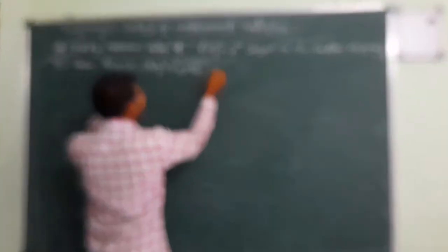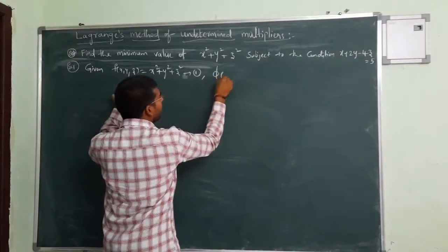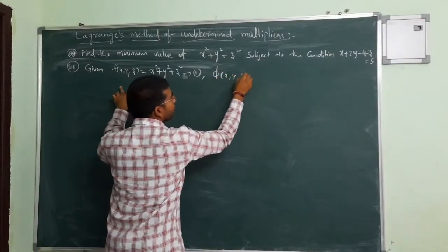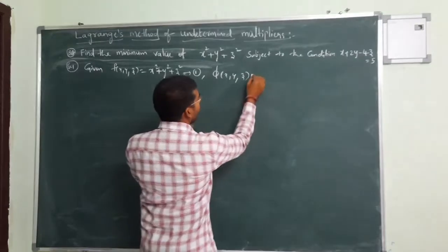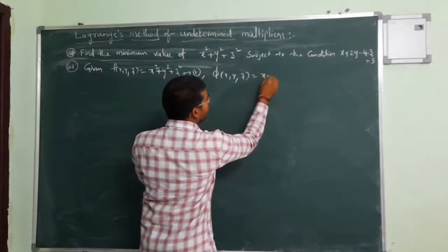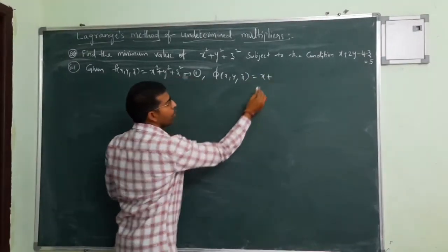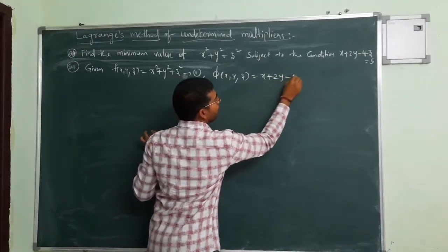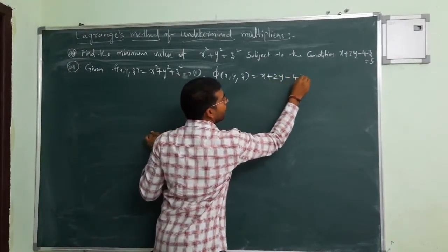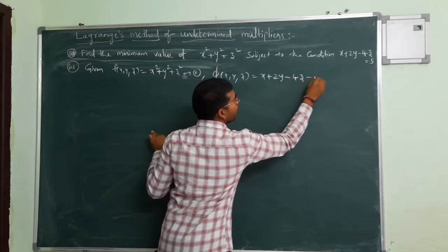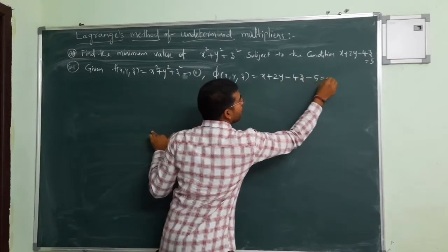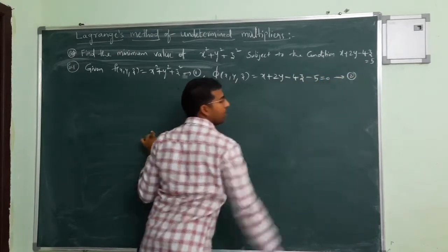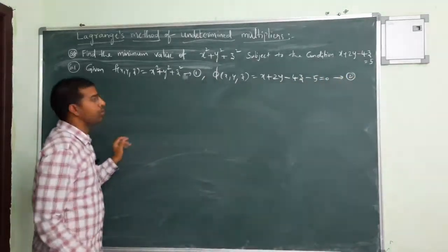And what is the given condition? The condition phi of x, y, z is: x plus 2y minus 4z minus 5 is equal to 0. This is considered as equation 2.